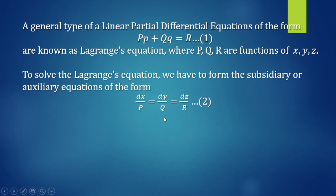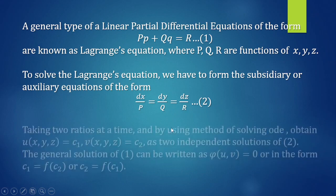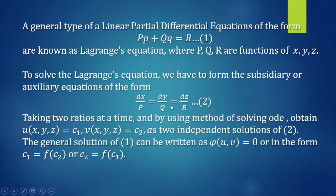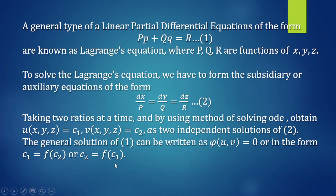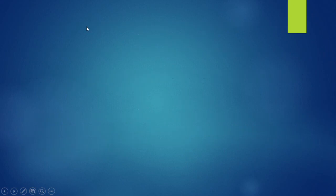The auxiliary equations are of the form: dX/P equals dY/Q equals dZ/R. Taking two ratios at a time and using the method of solving ordinary differential equations, we obtain U equals C1 and V equals C2 as two independent solutions. The general solution can be written as phi(U,V) equals 0, or in the form C1 equals F(C2). Now let's solve the main problem applying this.